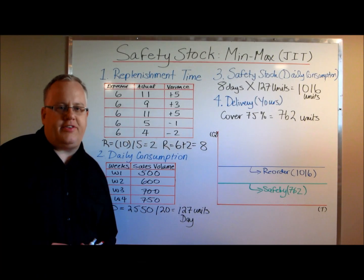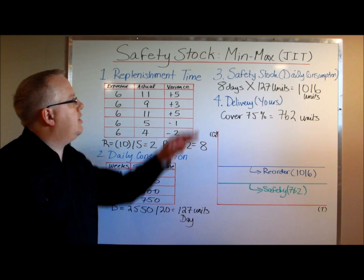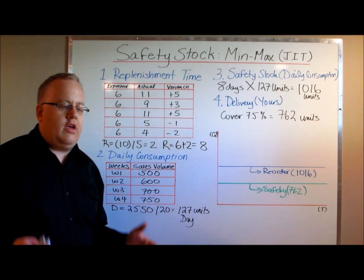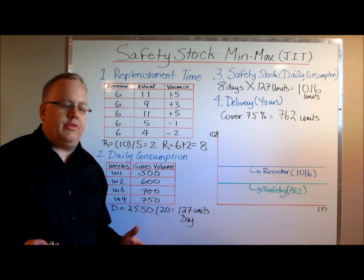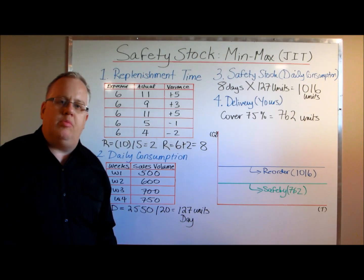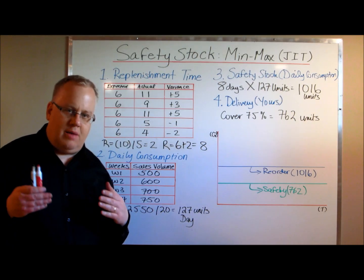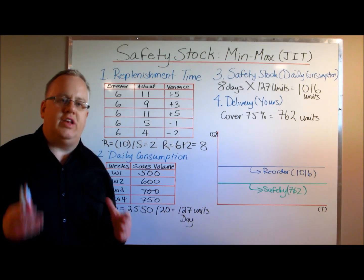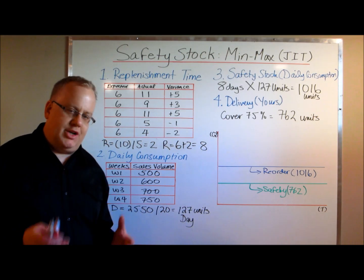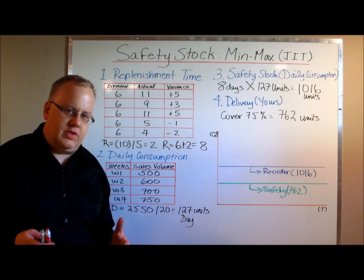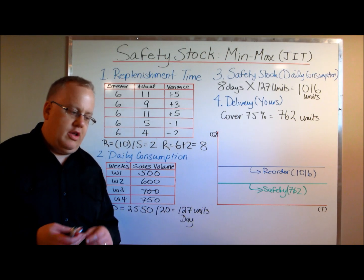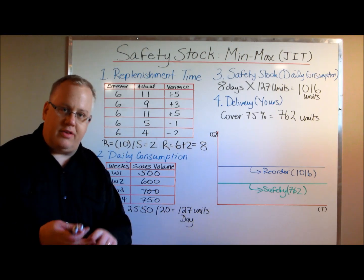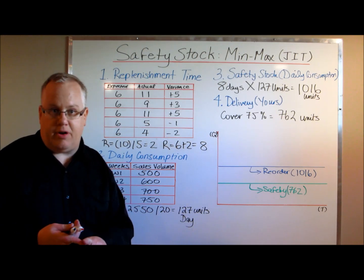Hi guys, Ian Johnson from driversuccess.com. Today we're going to talk about calculating a safety stock — determining a minimum inventory count in order to protect your company against the high cost of an inventory stockout. When you measure the cost of an inventory stockout, you're talking about lost sales, lost gross profit, lost customers, and lost market share.